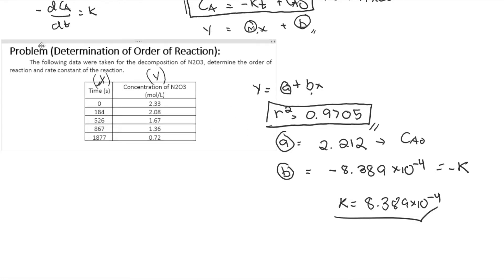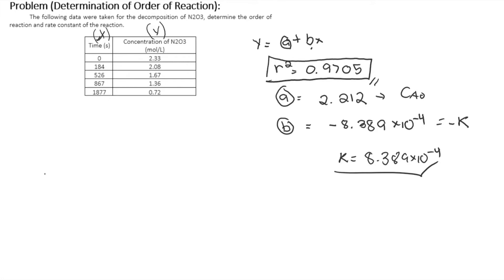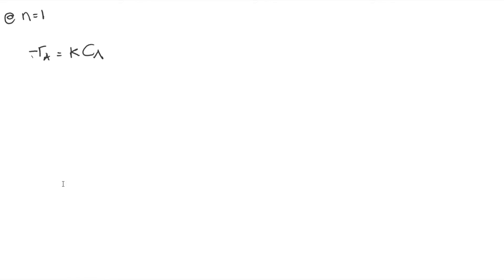Now that we've finished the zeroth order, let's consider what if it follows a first order reaction. For first order, negative rA equals k times CA raised to 1, which is just k times CA.